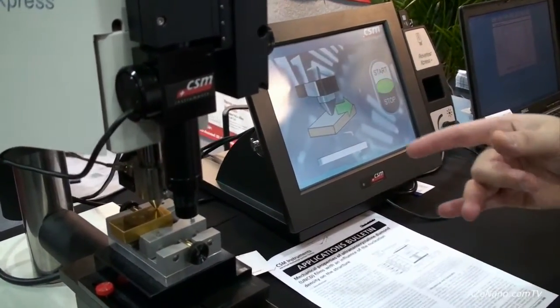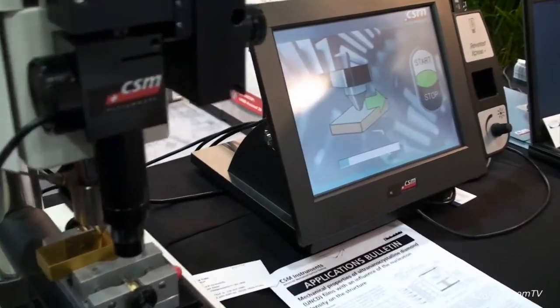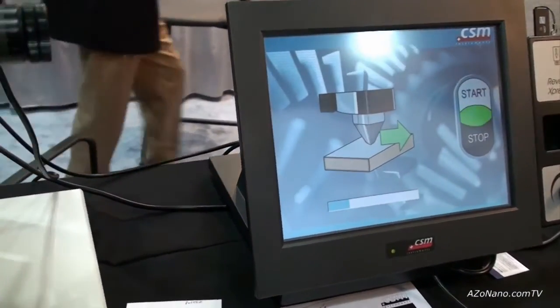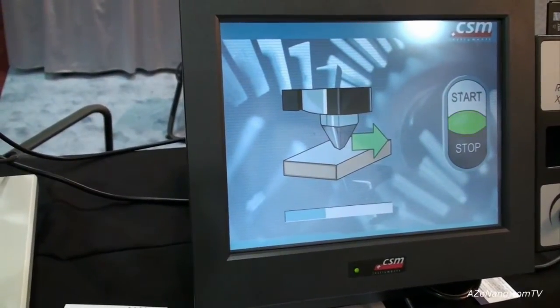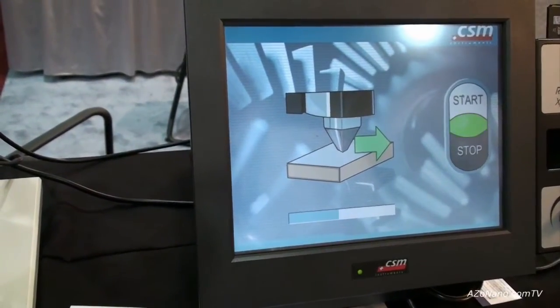As you're seeing now we just approached our diamond indenter to the surface. This is a typical sample, it's a titanium nitride coating on steel with a thickness of about two or three microns.